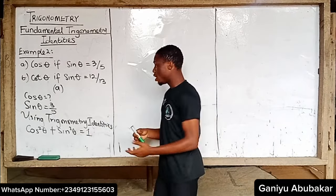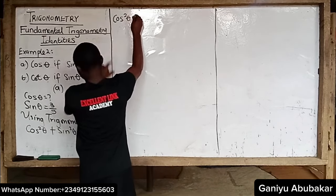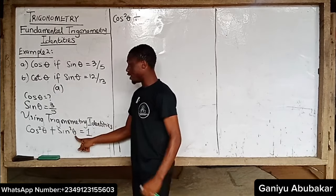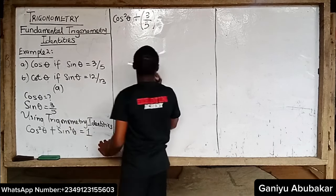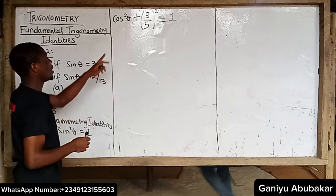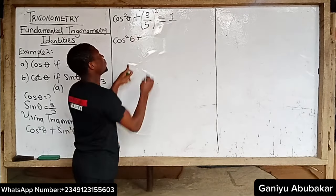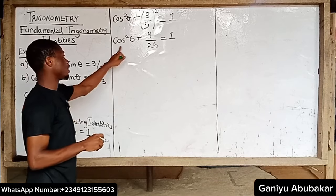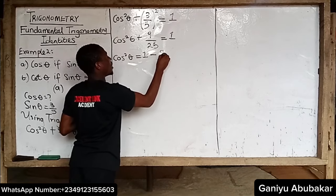At this point, let's put in values. I'm looking for cos theta, but I know sin theta. So I'll have cos squared theta plus sin squared theta equals 1. We know sin theta is 3 over 5, so I'll substitute: cos squared theta plus (3 over 5) squared equals 1. Applying indices: cos squared theta plus 9 over 25 equals 1. Taking 9 over 25 to the other side: cos squared theta equals 1 minus 9 over 25.